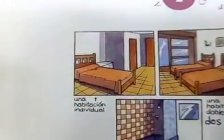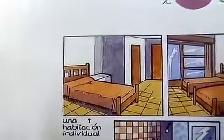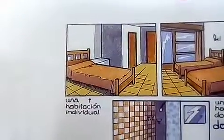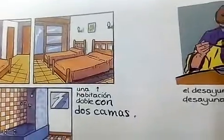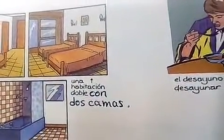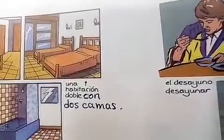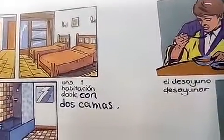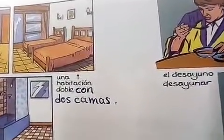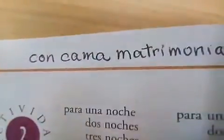Let's look now at the type of rooms. Una habitación individual — a single room. Una habitación doble con dos camas — a twin room. If you would like to book a double room, you need to ask for una habitación doble con cama matrimonial.